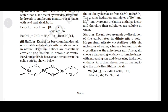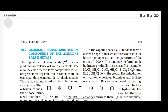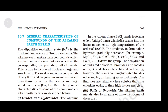Halides: except for beryllium halides, all other halides of alkaline earth metals are ionic in nature. Beryllium halides are essentially covalent and soluble in organic solvents. Beryllium chloride has a chain structure in the solid state. In the vapor phase, beryllium chloride forms a chloride-bridged dimer which dissociates into the linear monomer at high temperatures (around 1200 K). The tendency to form halide hydrates decreases down the group: MgCl₂·8H₂O, CaCl₂·6H₂O, SrCl₂·6H₂O, BaCl₂·2H₂O. Hydrated halides of Ca, Sr and Ba can be dehydrated on heating, but those of Be and Mg suffer hydrolysis instead.